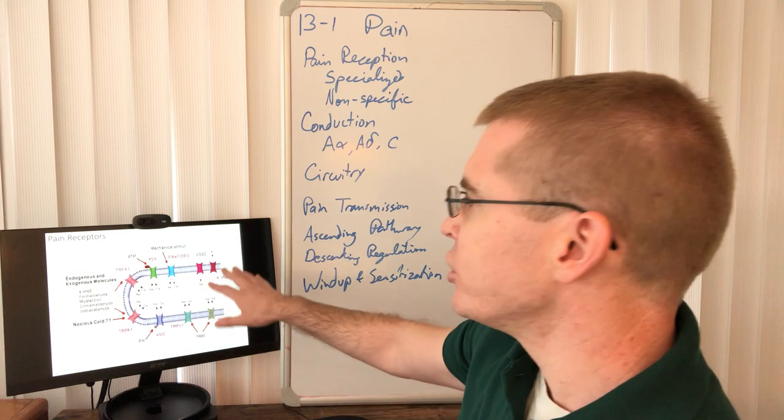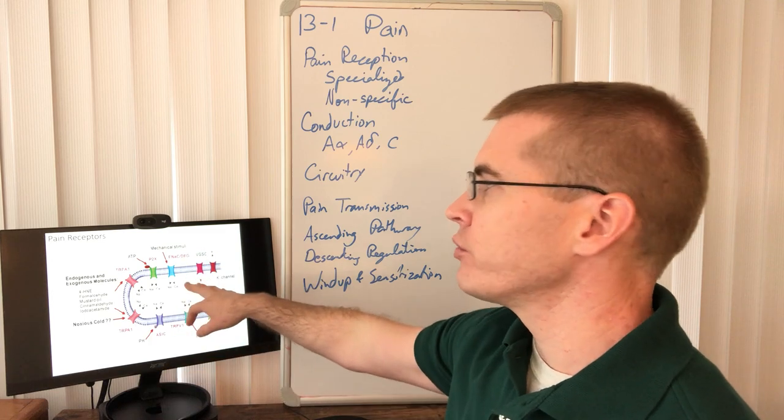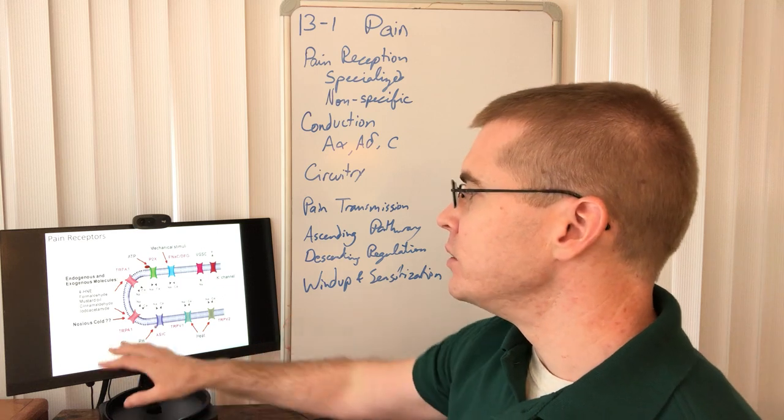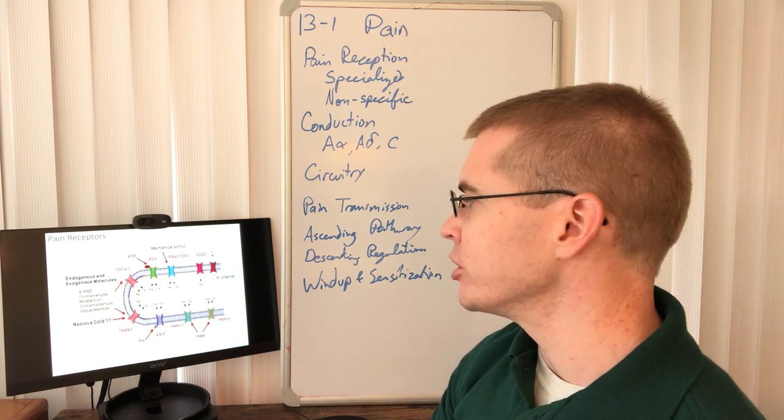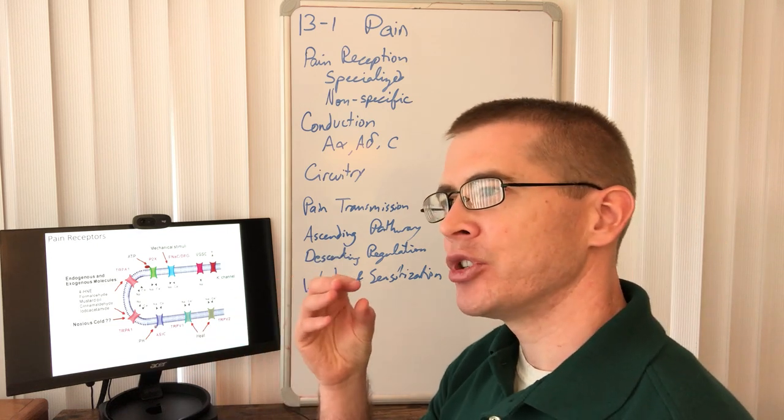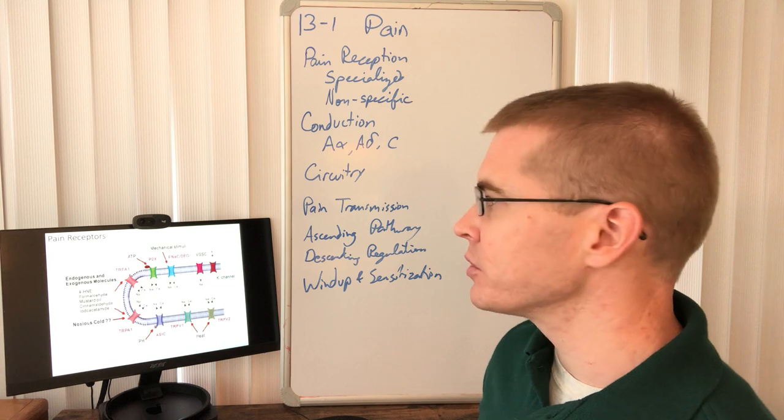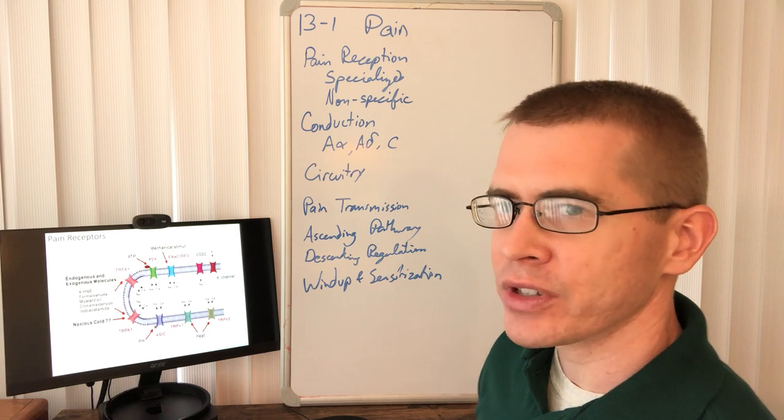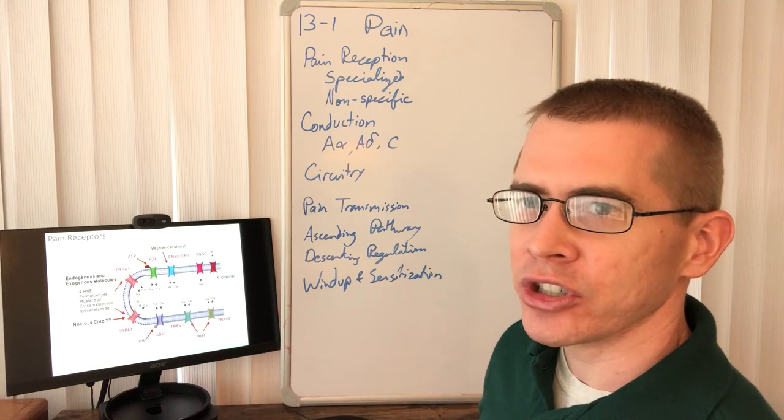So some other things that can result in the noxious stimulation of nociceptors is extreme mechanical stimulation that physically opens these ion channels. Noxious cold, pH, the acidity or basicness of a solution, as well as heat. So it's thought that these changes in temperature or pH result in a conformational change that opens an ion channel in these nociceptors. But some pain reception also seems to be produced along normal sensory receptors and it's triggered as an overstimulation and noxious stimulation of normal sensory receptors.